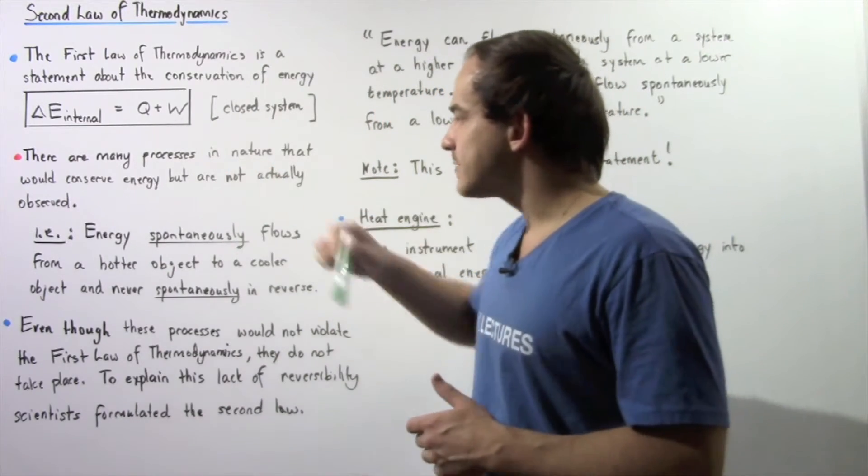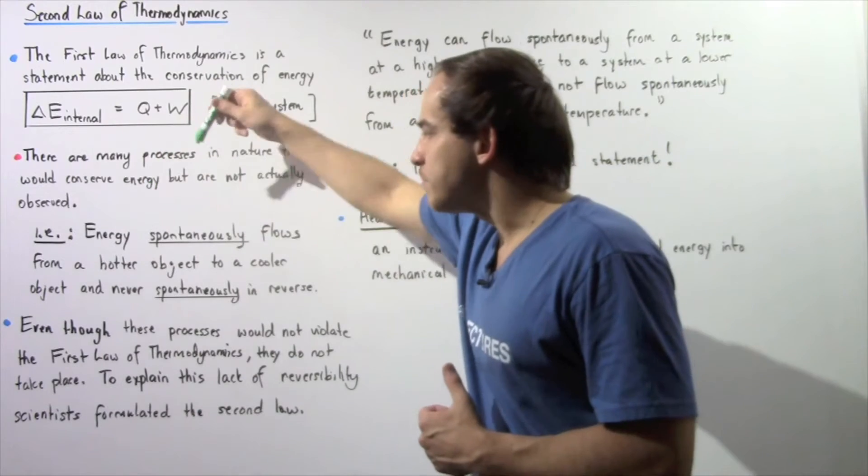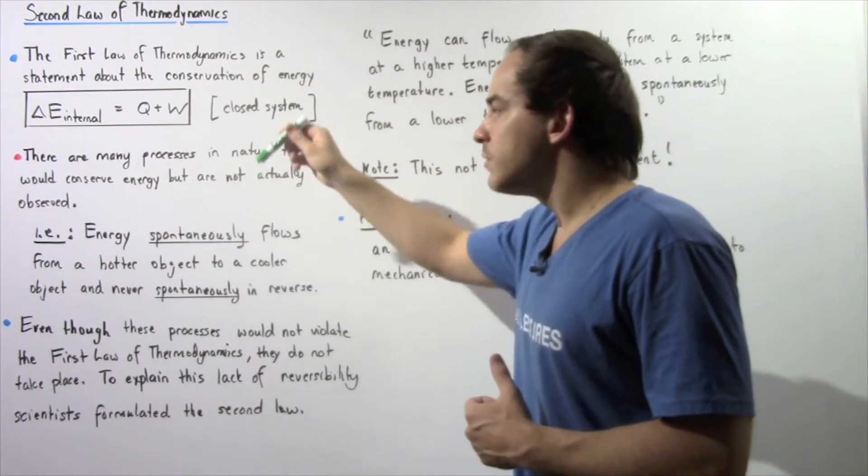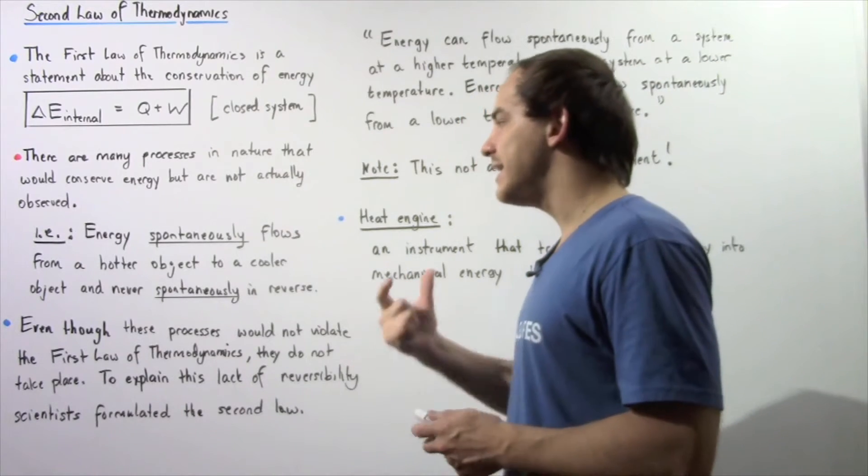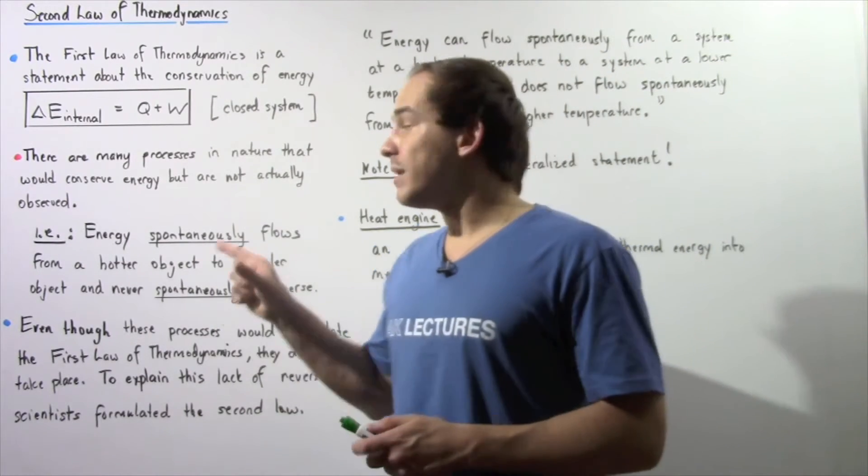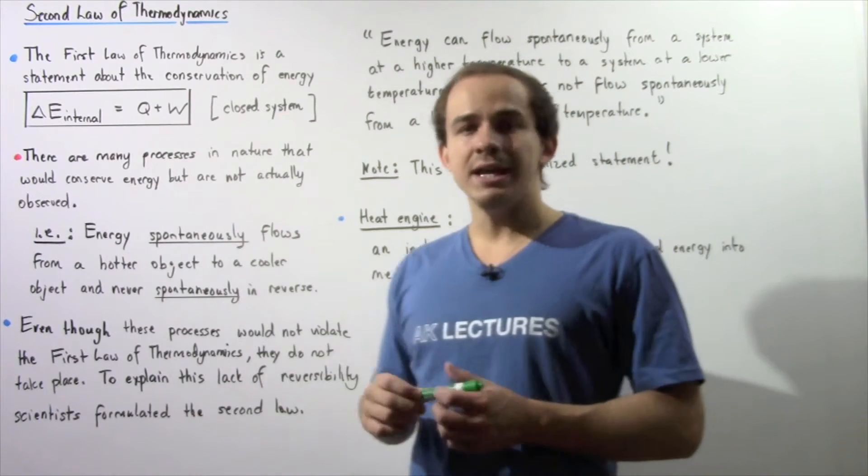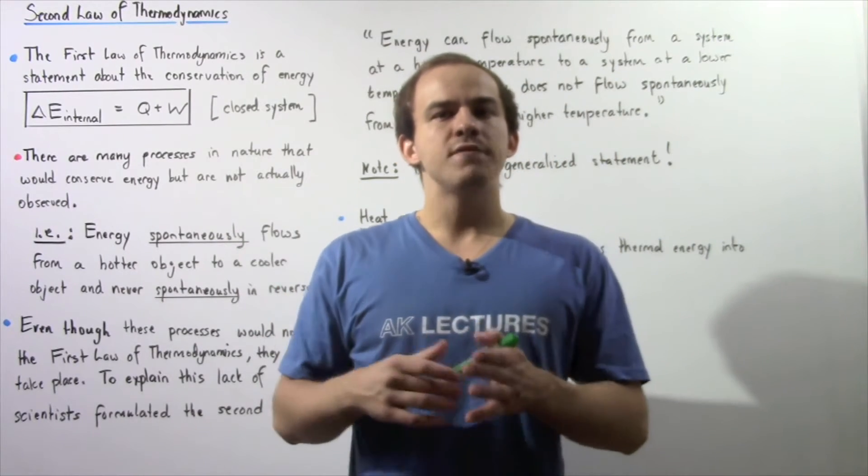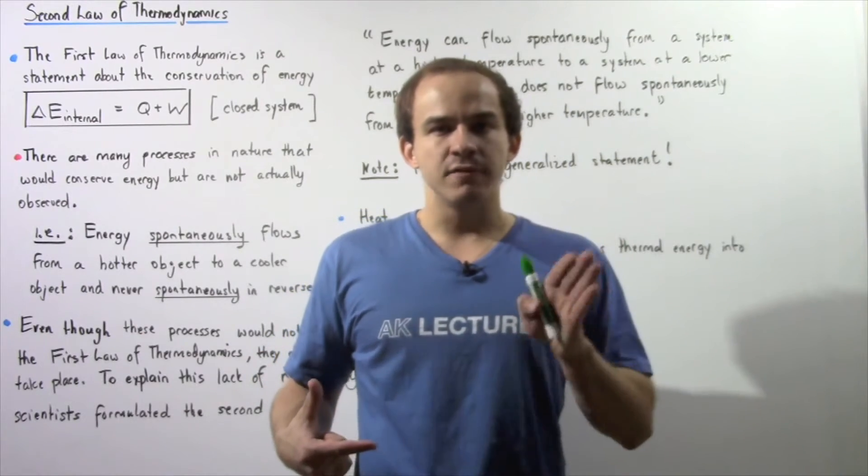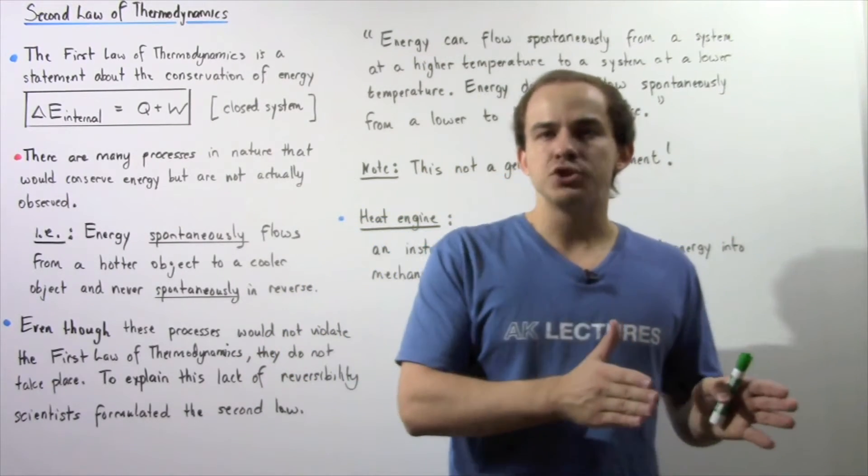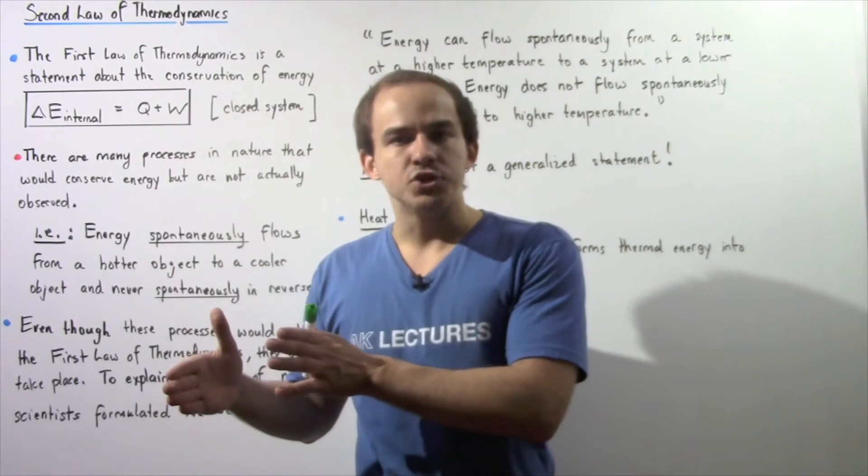The first example is as follows. Energy spontaneously flows from a hotter object to a cooler object and never spontaneously in reverse. Spontaneously we simply mean without the input of outside work. So we're never going to see energy spontaneously flow from a cold object to a hotter object.